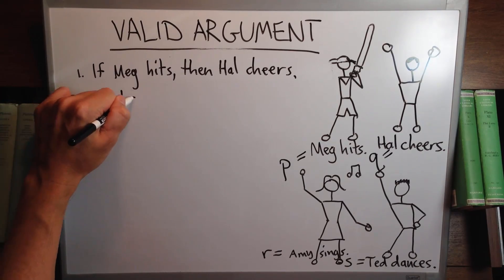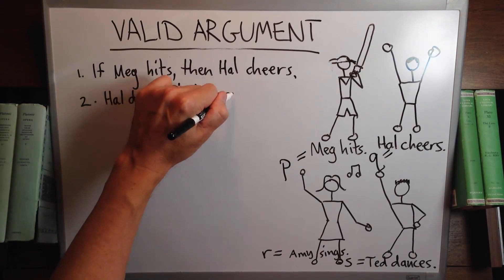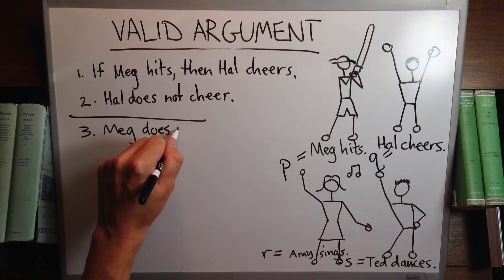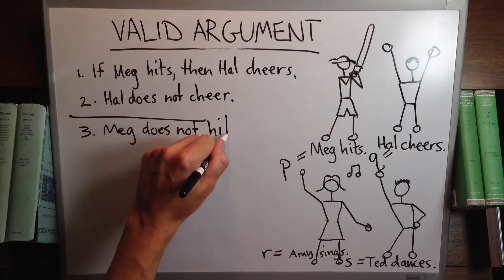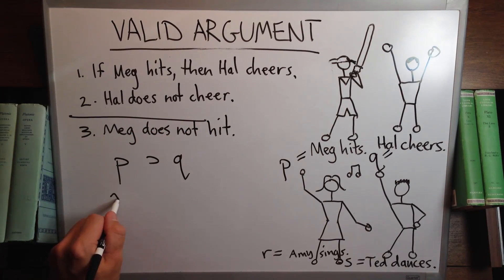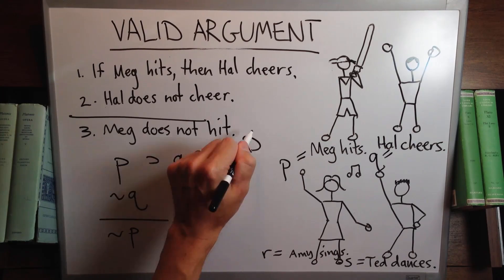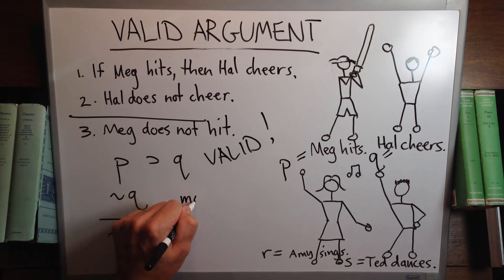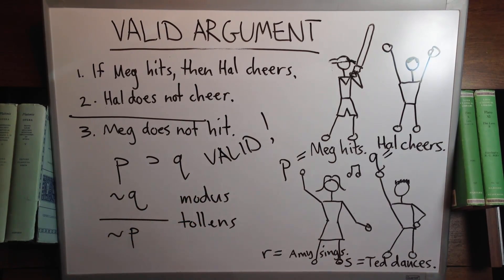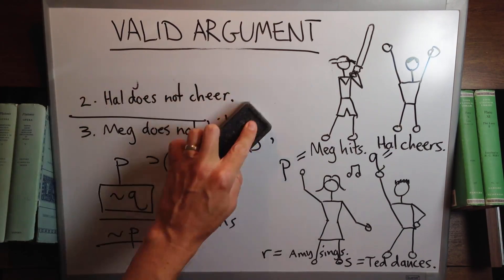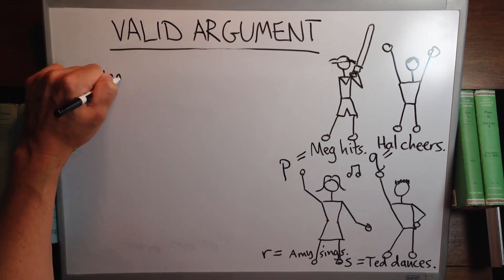Next example: if Meg hits then Hal cheers; Hal does not cheer; therefore Meg does not hit. The form is: if P then Q; not Q; therefore not P. It's called modus tollens. You're denying a necessary condition for P, and so you infer not P.